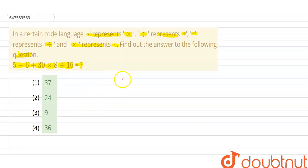The equation is 5 minus 6 plus 30 into 8 divided by 16 equals what? Guys, LHS is our left side. Let's see. Now guys, the sign that we see, we change it.